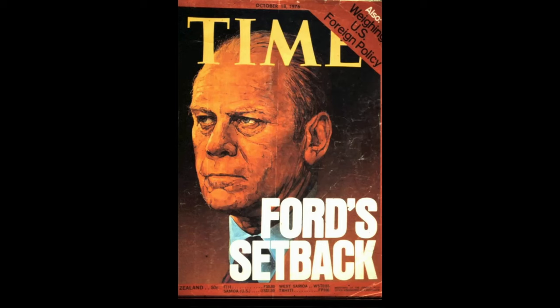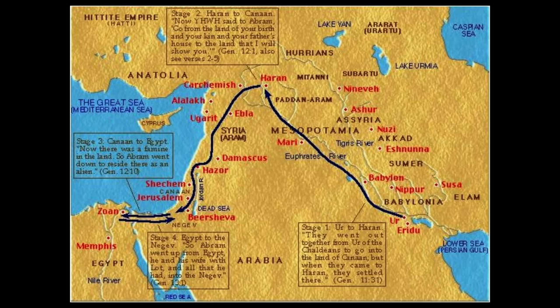Even Time magazine on October 18th, 1976, referred to the Ebla tablets and said, quote, they provide the best evidence to date that some of the people described in the Old Testament actually existed. Genesis chapter 12 verse 10 tells us that famine in the land of Canaan caused Abraham to go to Egypt for relief.